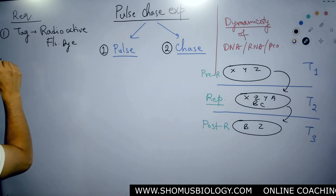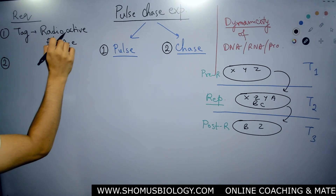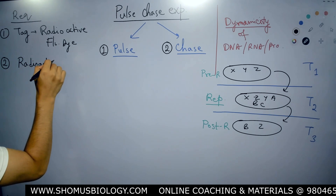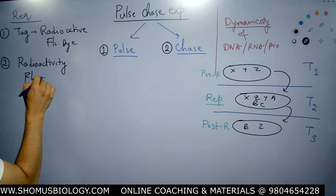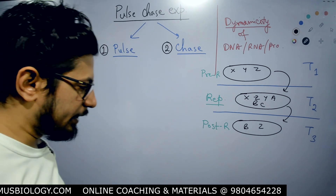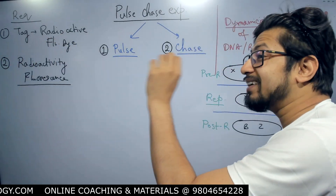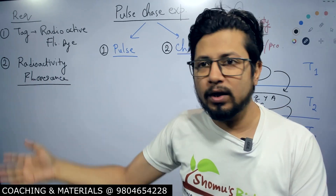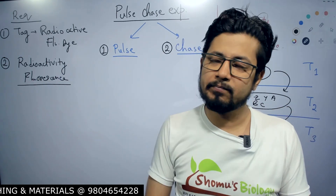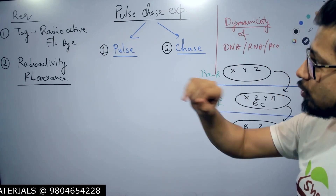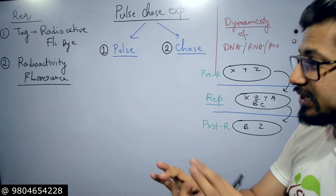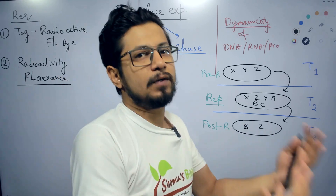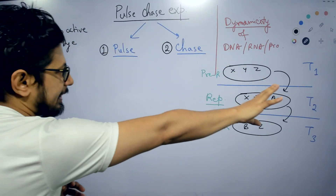The second thing we need is a measurement device for radioactivity or fluorescence. We need quantitative measurement — not qualitative. If there is radioactivity, how much radioactivity? If there is fluorescence, how much fluorescence? We need to measure the quantity. Those are the requirements. Now let's talk about the exact experiment focused on proteins, although the same experiment can be done for DNA as well as RNA.